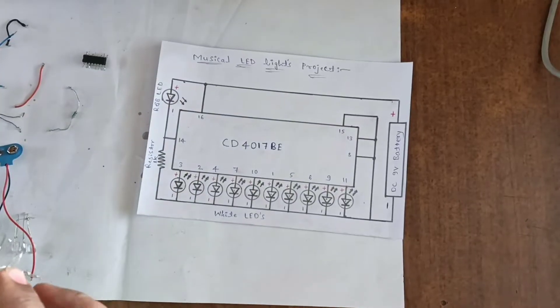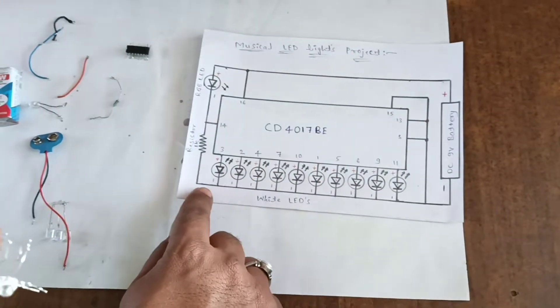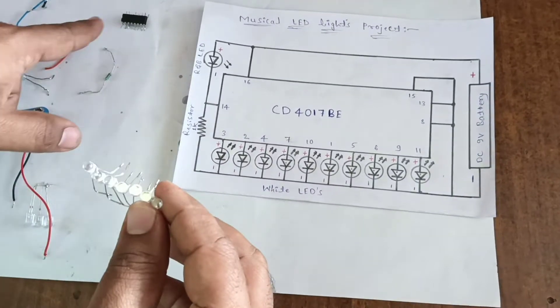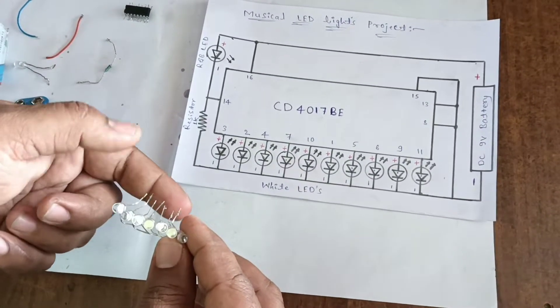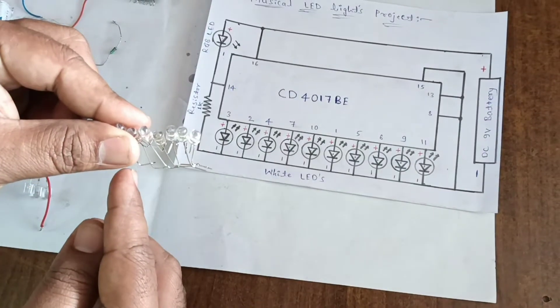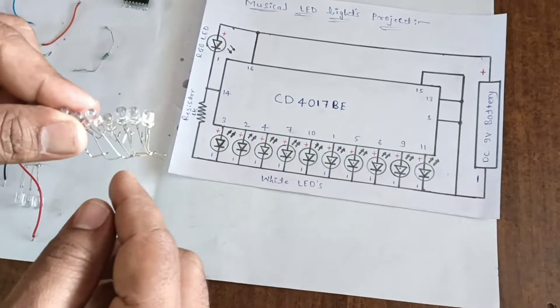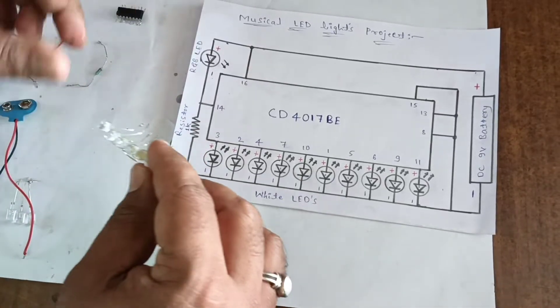You can see here, these are the 7 LEDs from pin number 1 to 7. We connect LEDs of positive. These are the positive terminals and these are the negative terminals. Negative terminals are connected together.